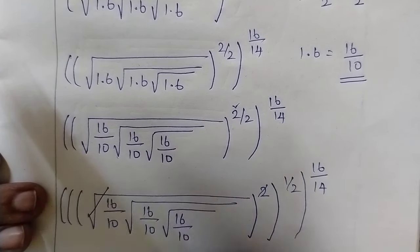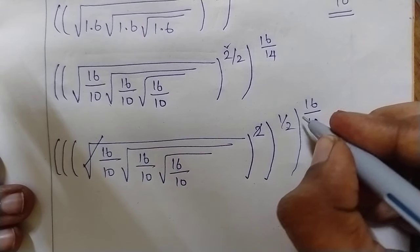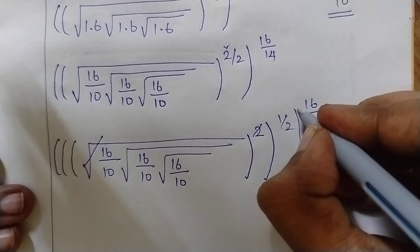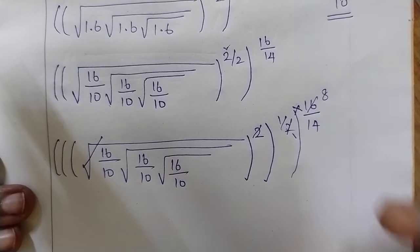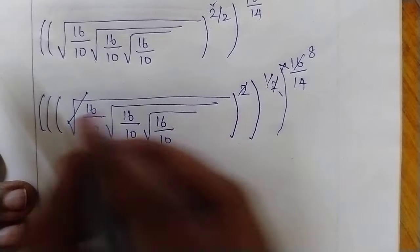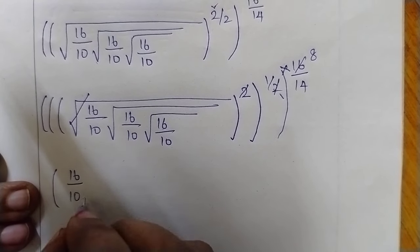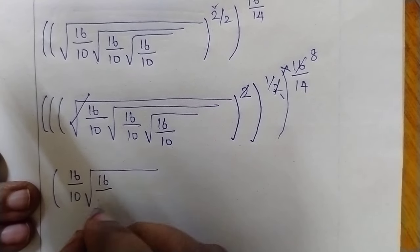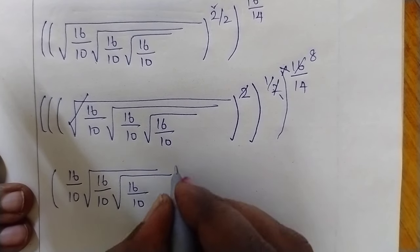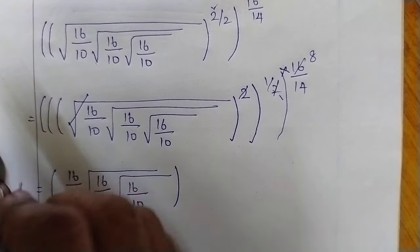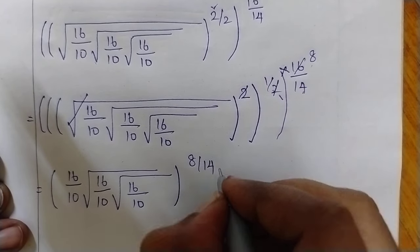This square and this root get cancelled. So this is in the a power m, the whole power n format. We can multiply these two: 1 times 2 is 2, 8 times 2's are 16. Therefore this becomes 16 by 10, the root of 16 by 10, which are equal — to the power of 8 by 14.